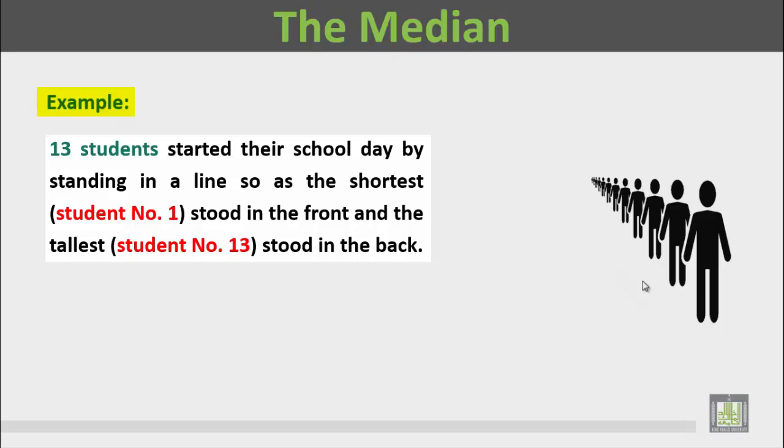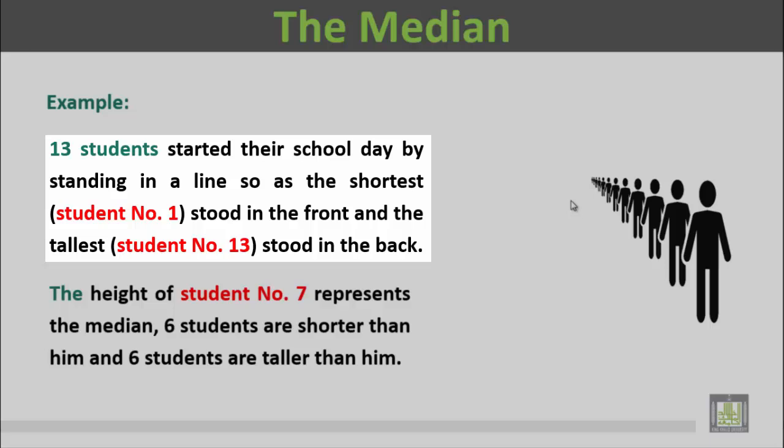Example: 13 students started their school day by standing in a line, so as the shortest, that's student number 1, stood in front and the tallest, student number 13, stood in the back.